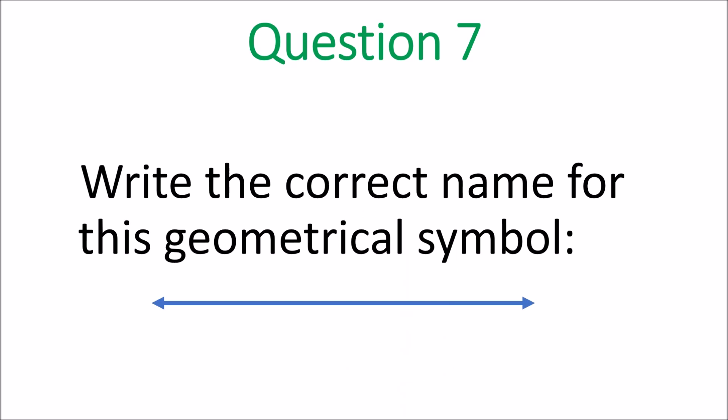Question 7. Write the correct name for this geometrical symbol. What's this geometrical symbol? That big word, make sure you call it for them. It has something to do with geometry. And it is a line. Yes. Goes on in both directions. So it's a line.